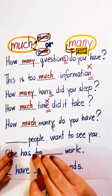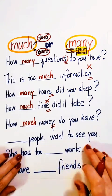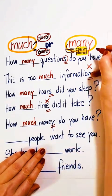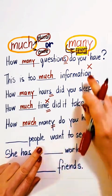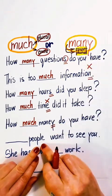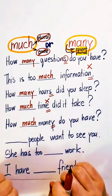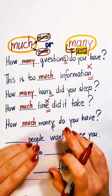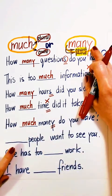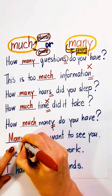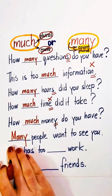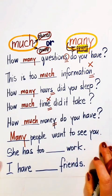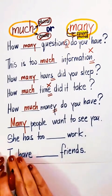Much people or many people want to see you? People is a plural noun. It's a count noun. You can count people — 10 people, 15 people. Use many. Many people want to see you.